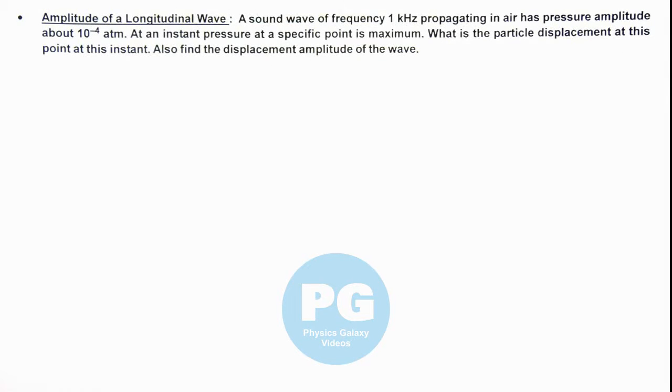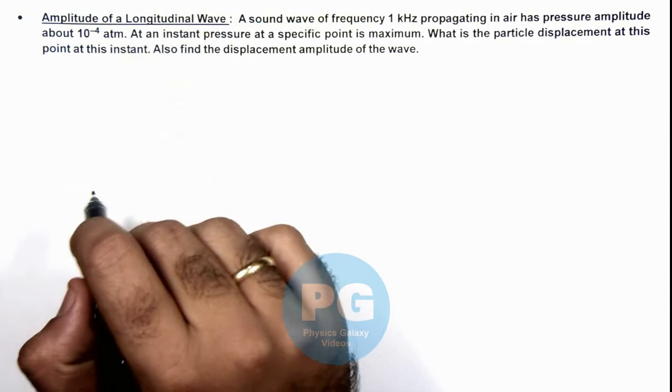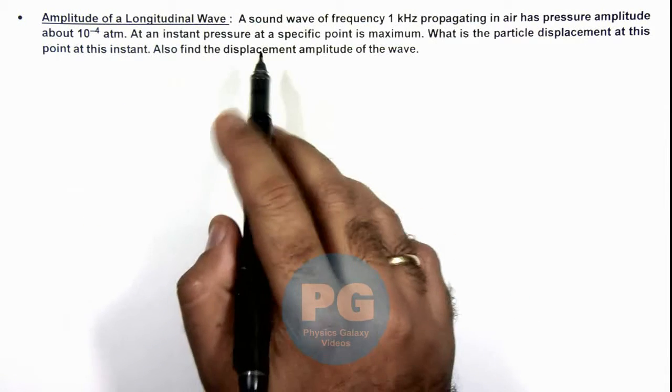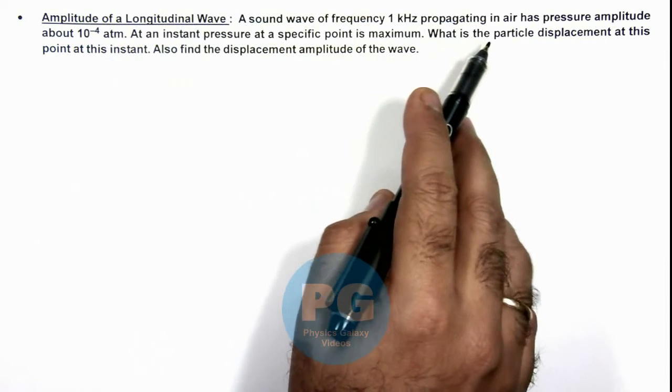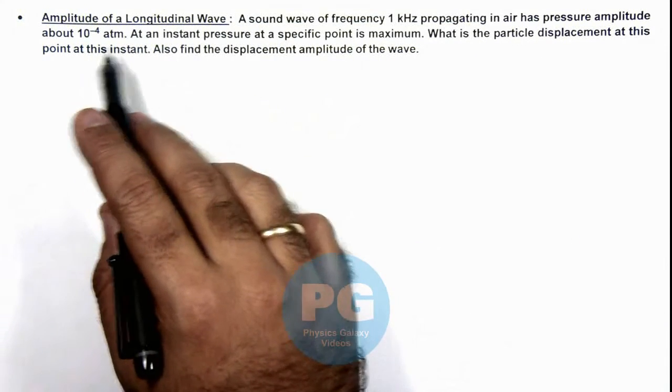In this illustration, we'll discuss the amplitude of a longitudinal wave. We are given that a sound wave of frequency 1 kilohertz propagating in air has pressure amplitude about 10 to the power minus 4 atmosphere.